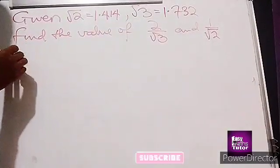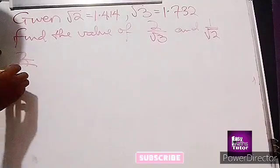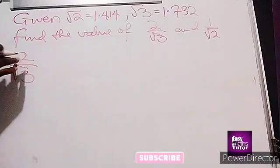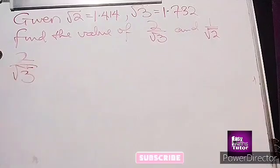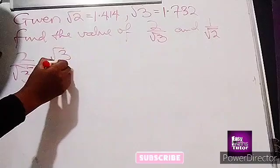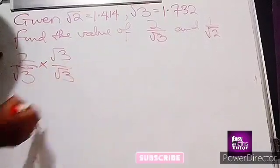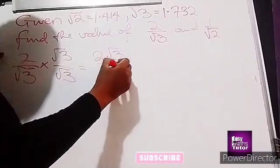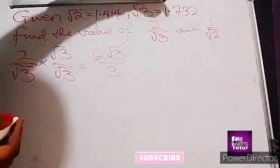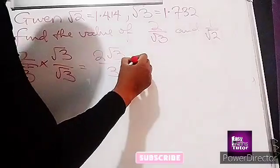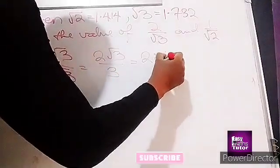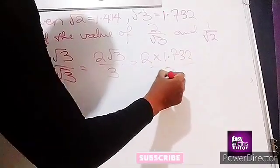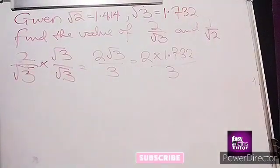So the first scenario, which is 2 all over root 3, we rationalize it. We say root 3, root 3, giving us 2 root 3 all over 3. So we know the value of root 3 is this. So we say 2 times 1.732 all over 3. You see how easy it is to solve? Very, very simple.